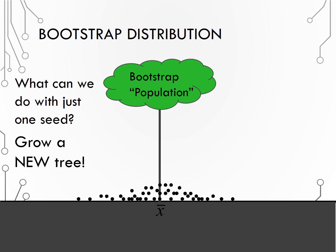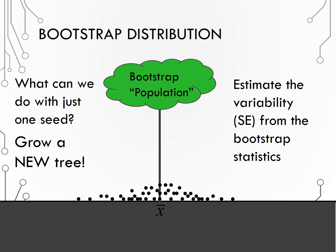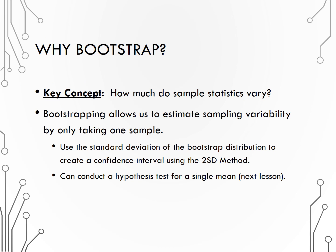Finally, this distribution of statistics from many bootstrap re-samples, called the bootstrap distribution, will provide us with what we originally wanted: an estimate of the sampling variability. To estimate the spread of statistics from many, many samples without having to take many, many samples, bootstrapping gives us an estimate of the standard deviation of a statistic, like SD of X-bar or SD of P-hat, which can be used in the 2SD method to create a confidence interval, or with an extra step it can allow us to conduct a hypothesis test for a single mean. Note that bootstrapping can actually be used in a wide variety of scenarios, though in this course we will limit the use of bootstrapping to working with a single quantitative variable.